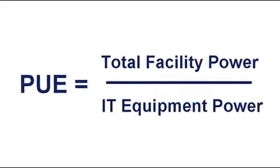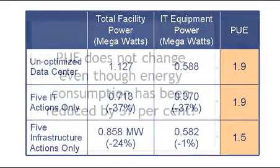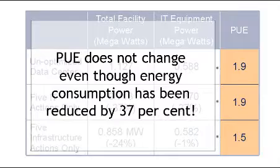You'd have a PUE of theoretically one if they were a hundred percent efficient — meaning all incoming power is consumed by the IT load. But using that as an example, the metric saying the PUEs are equal is not correct, because the second server is doing twice the processing of the first. That's the importance of CUPS — Compute Units Per Second — because it starts to take into account what the processor is doing in relation to the energy it is using.